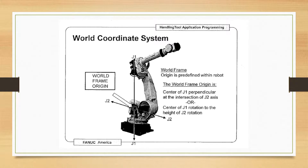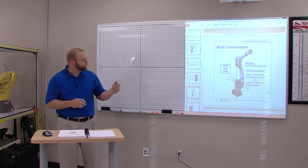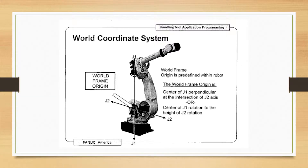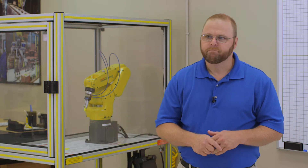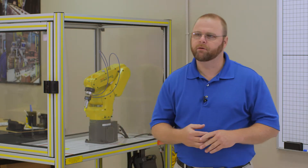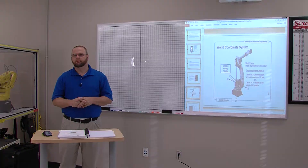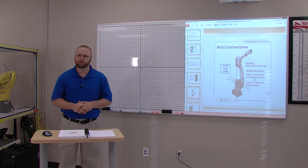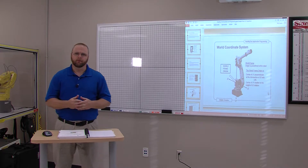The orientation of the world frame can change from improper mastering. When we jog the robot in the world coordinate system, the servo motors will maintain a linear straight movement with respect to the tool. You can see this is a visual of where that world frame is — it's the intersection of the J1 and J2 axes, which will be the origin point for the robot. You never want to mess with your world frame. They won't allow you to mess with it unless you get into a mastering application. It cannot be changed by the user.